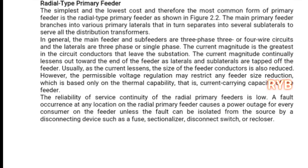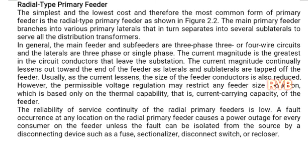The current magnitude is greatest in the circuit conductors that leave the substation. The current magnitude decreases towards the end of the feeder. Similarly, the radial primary feeder has a higher conductor size at the start and lower conductor size towards the end.